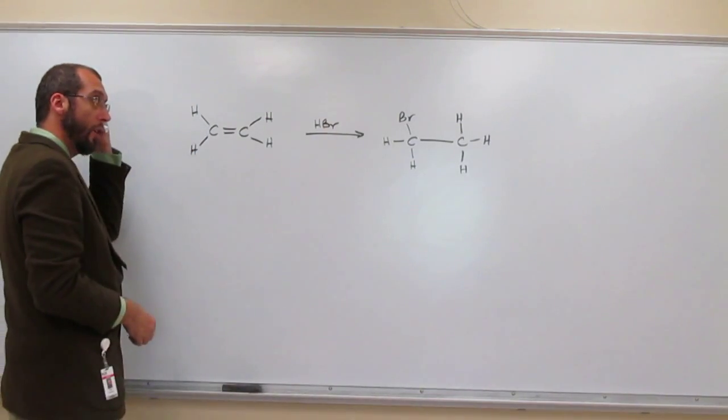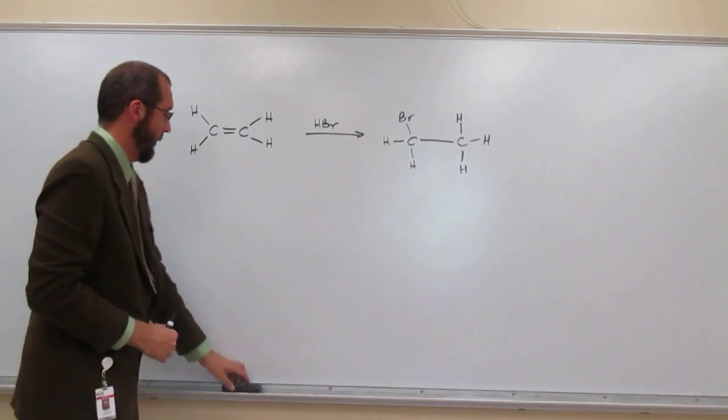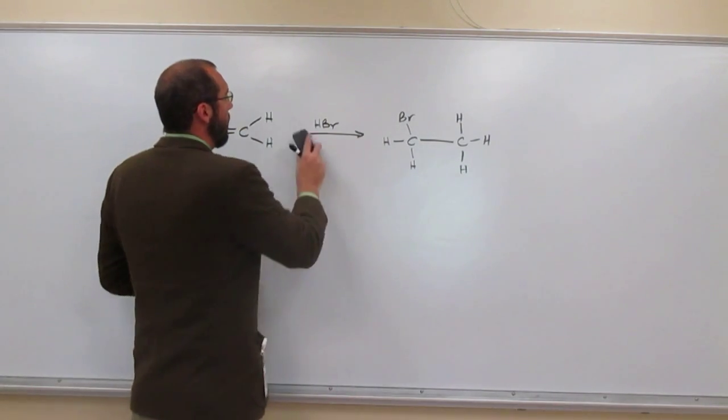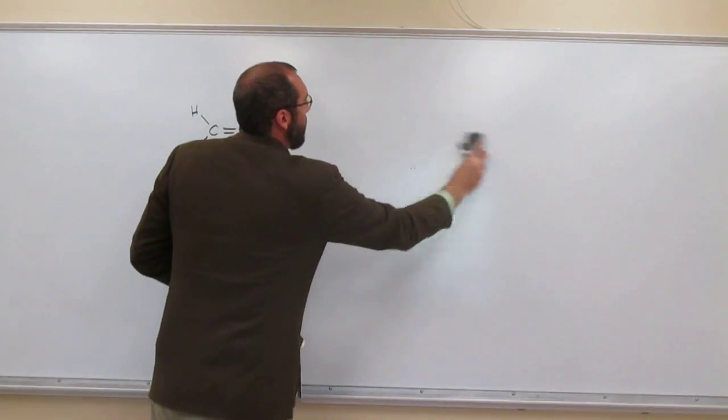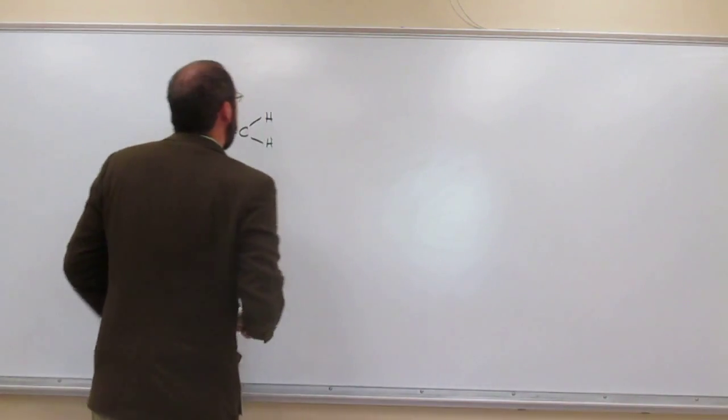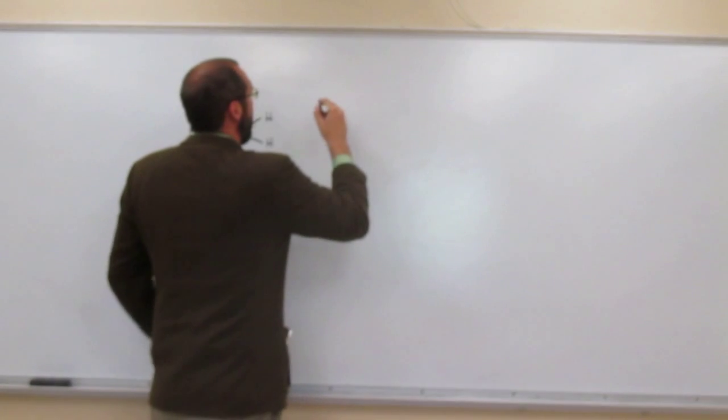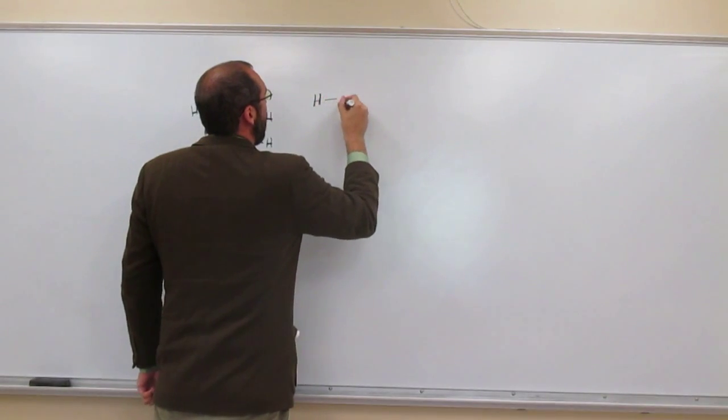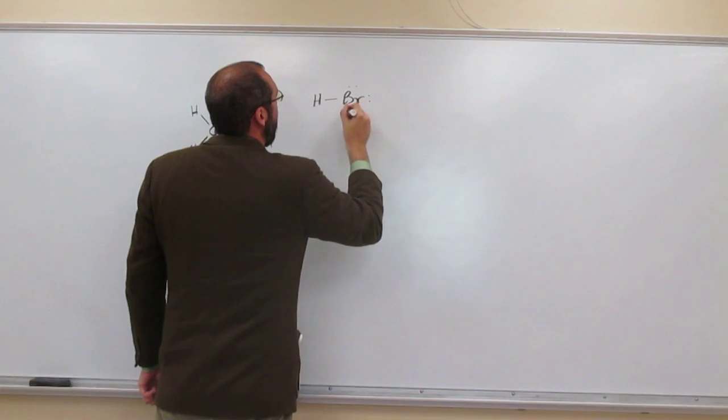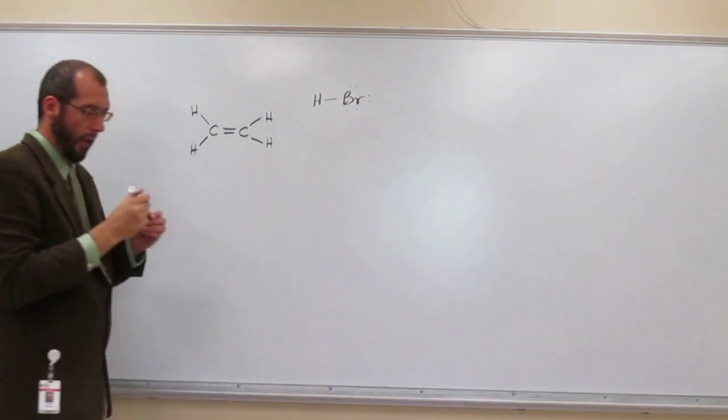So in order to show the mechanism we're going to have to erase some of this stuff and then explicitly draw out the bonds of HBr and then also show the lone pairs.